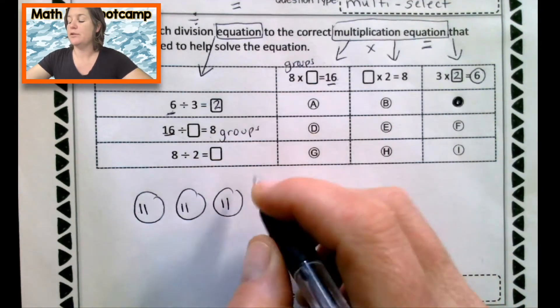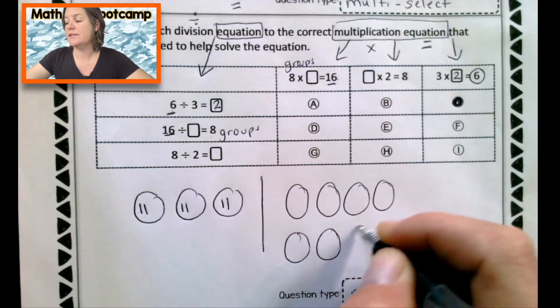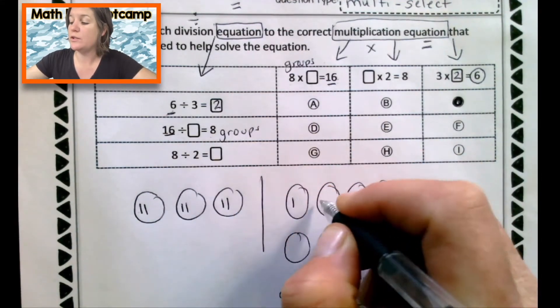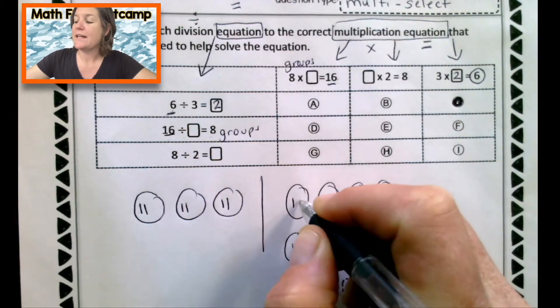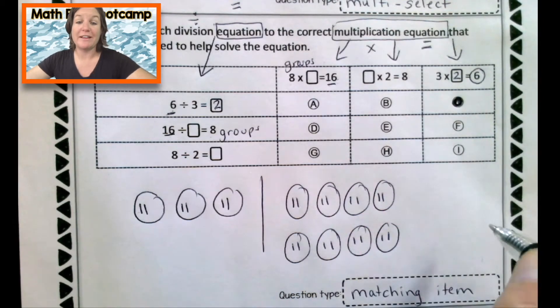Since eight is in the group spot here, I'm going to make eight my groups. So one, two, three, four, five, six, seven, eight. 16 is my total. I'll divide it equally into eight groups. So that would be one, two, three, four. Count with me. Five, six, seven, eight, nine, 10, 11, 12, 13, 14, 15, 16. All right. That divides evenly.